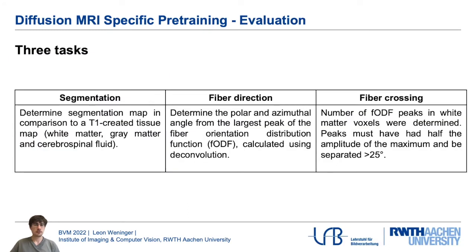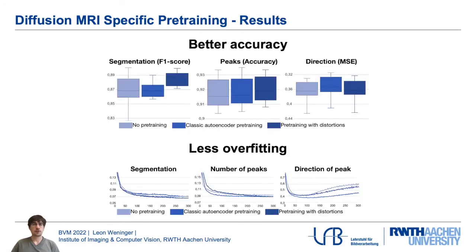Applying this to actual deep learning tasks, we show three different tasks: a segmentation task, a fiber-direction regression task, and a fiber-crossing detection task. In the top row, we see the test-set results for all three tasks — the segmentation task, the number of peaks task, and the direction of the largest peak.